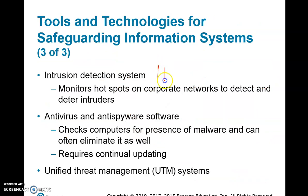Intrusion Detection Systems (IDS) are another safeguarding tool. IDS monitors corporate networks to detect and deter intruders. If someone tries to access a system they are not authorized to use — such as Roosevelt University's Blackboard — the IDS detects the attempt, identifies the intruder, and deters them from getting in.